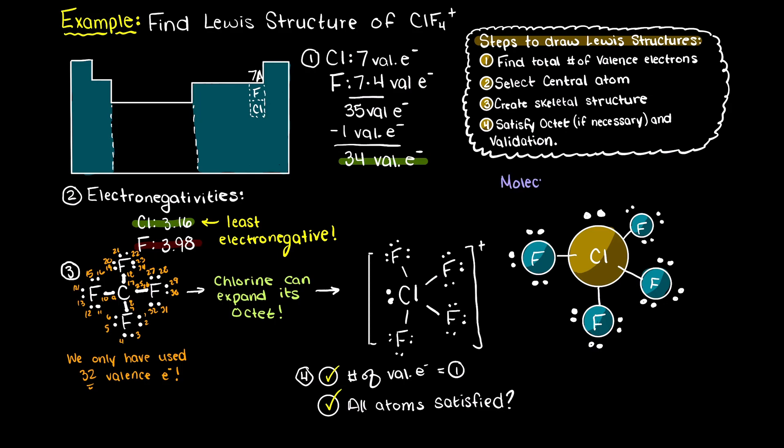In terms of molecular geometry, our tetrafluorine chlorate cation will be a trigonal bipyramid, which will look something like this.